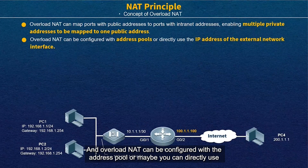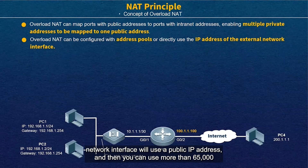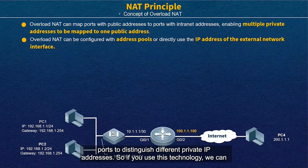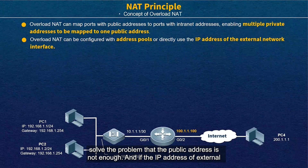Overload NAT can be configured with an address pool, or you can directly use the IP address of the external network interface — because in many scenarios, the external network interface will use a public IP address. You can then use more than 65,000 ports to distinguish different private IP addresses, which solves the problem of insufficient public IP addresses.